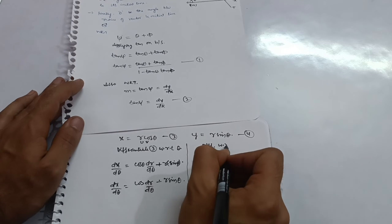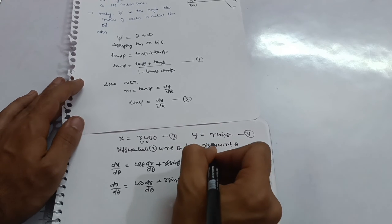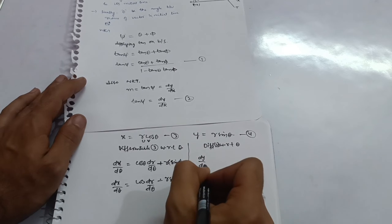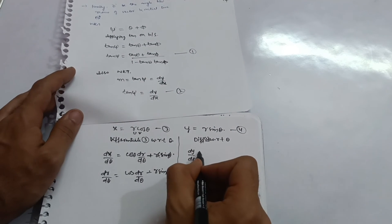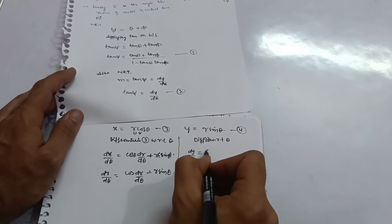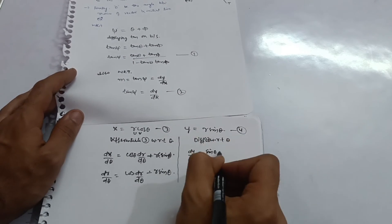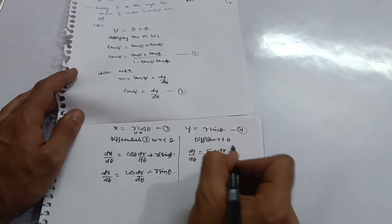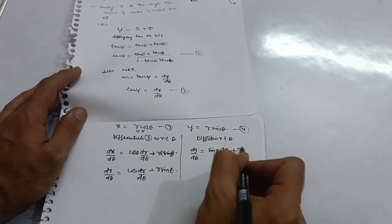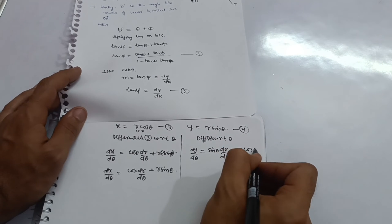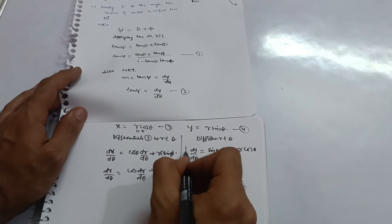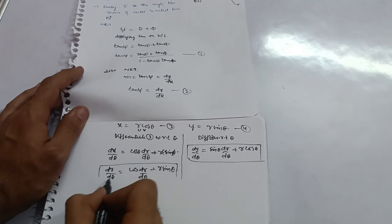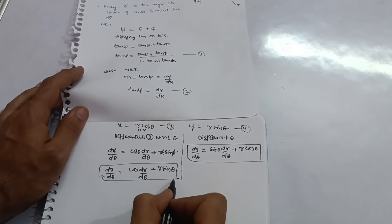Differentiating the fourth equation y = r sin θ with respect to θ: dy/dθ = sin θ · (dr/dθ) + r cos θ. Now we have both dy/dθ and dx/dθ, which we will substitute next.